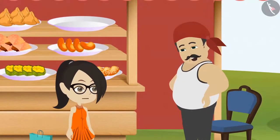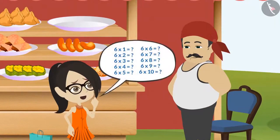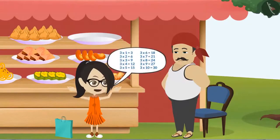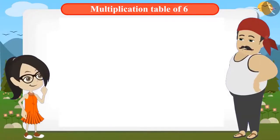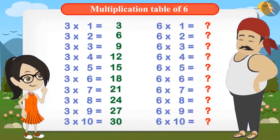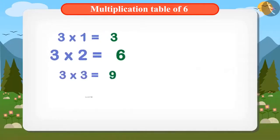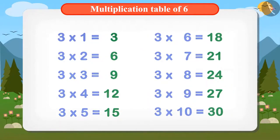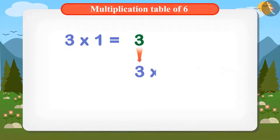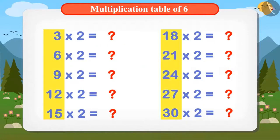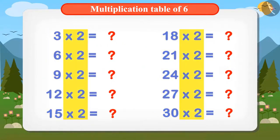What happened, Vandana? Are you having any trouble? Uncle, I do not know the table of 6. So what? Do you know the multiplication table of 3? Yes, I know the multiplication table of 3. Then you can easily find out the multiplication table of 6 from the multiplication table of 3. This is the multiplication table of 3. If you multiply 2 with the first answer in the table of 3, the answer will be 6, which will be the first answer in the table of 6. Similarly, multiplying the answers from the table of 3 with 2 will give the complete multiplication table of 6.